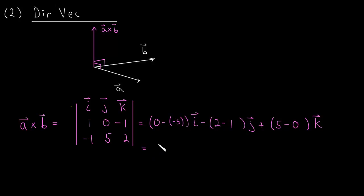And this simplifies to 5i minus j, or 1j if you prefer, plus 5k. And if we want to write this a little bit differently, this is the same thing as (5, -1, 5). So what is this? This is A cross B, and from our discussion above, A cross B is in the direction that's perpendicular to A and perpendicular to B. So in other words, this is our direction vector D.